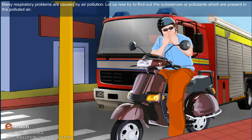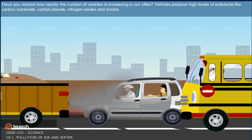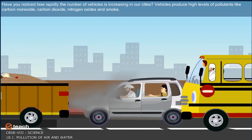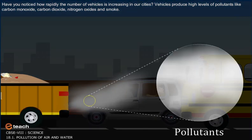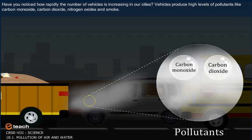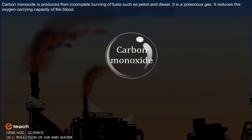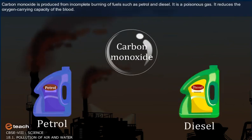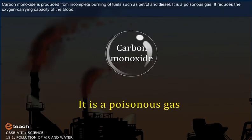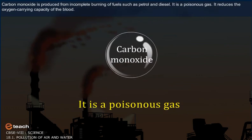Have you noticed how rapidly the number of vehicles is increasing in our cities? Vehicles produce high levels of pollutants like carbon monoxide and carbon dioxide. Carbon monoxide is produced from incomplete burning of fuels, such as petrol and diesel. It is a poisonous gas that reduces the oxygen-carrying capacity of blood.